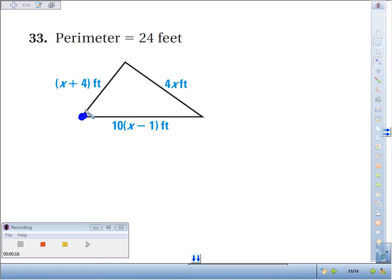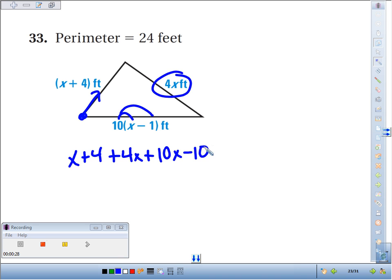So let's say I start here and I walk around. I've got x plus 4 plus another 4x plus, if I distribute this 10, I've got 10x minus 10. So whatever this is, this is my perimeter, it has to equal 24.